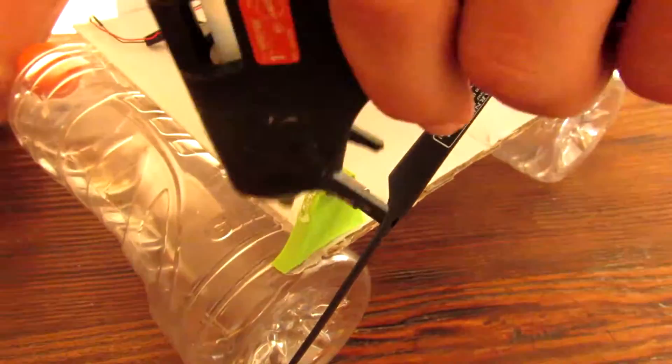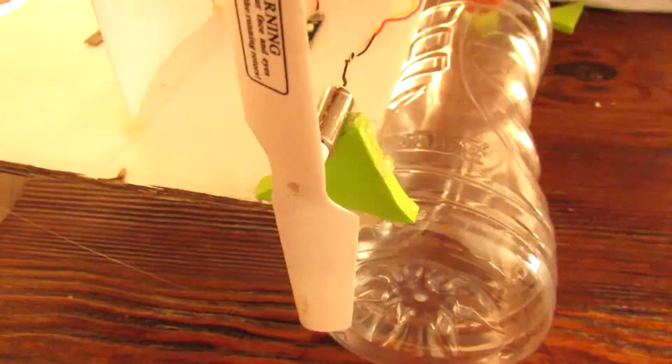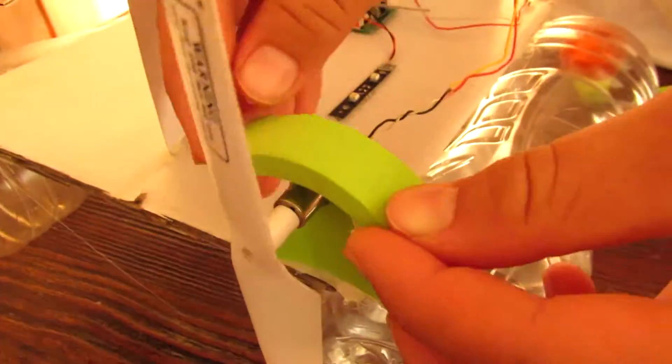So now we're going to take these strips of foam that we cut out earlier and we're going to glue them on top of the motors, basically clamping them down.